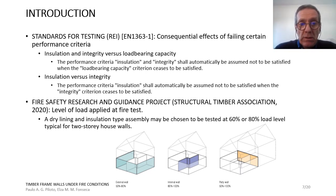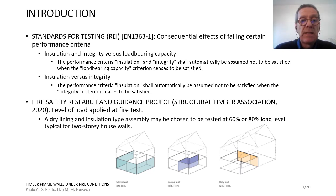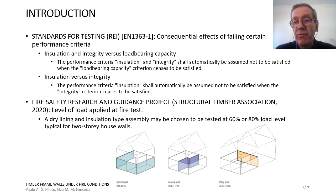According to the fire safety research and guidance project from the Structural Timber Association, the level of load to apply during the fire test should be between 60 and 80% of the load level, typically for two-storey house walls — both internal and external walls.